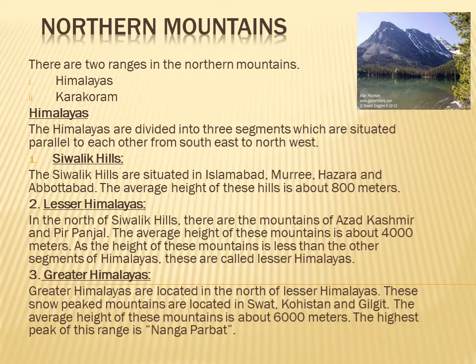Next is Lesser Himalayas. In the north of the Sivalik Hills there are the mountains of Azad Kashmir and Pir Panjal. The average height of these mountains is about 4000 meters. As the height of these mountains is less than the other segments of the Himalayas, these are called Lesser Himalayas.